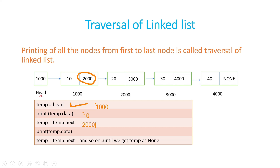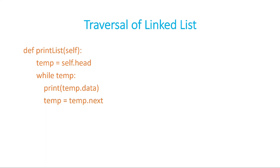So temp becomes 2000, and temp.data now gives us 20. Then temp.next is 3000, so 3000 becomes the new temp and you print 30. This continues until temp becomes None — when you do temp = temp.next and temp.next is None, there are no further nodes to go to, and that becomes the end. We use a loop where every time we change temp to temp.next, which is exactly what we saw in the previous slide.